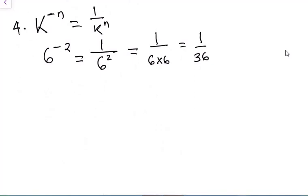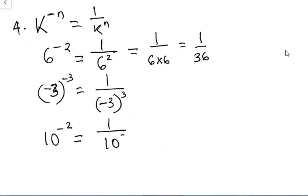And the second example will be a slight difference. We have minus 3 raised to power minus 3. So, what we are saying here is 1 over minus 3 raised to power 3. And the third example, 10 raised to power minus 2. It means 1 over 10 raised to power 2. Try to observe something in these three examples.